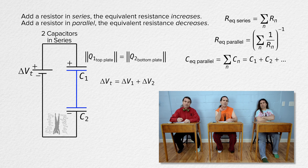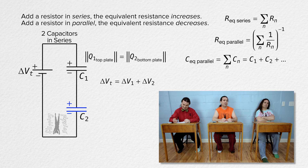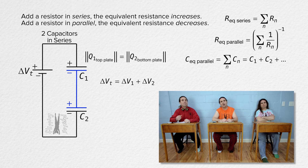Negative charges are pulled to the bottom plate of capacitor 1 by the positive charges on the top plate of capacitor 1. And positive charges are pulled to the top plate of capacitor 2 by the negative charges on the bottom plate of capacitor 2. That area gets polarized by the top plate of capacitor 1 and the bottom plate of capacitor 2.